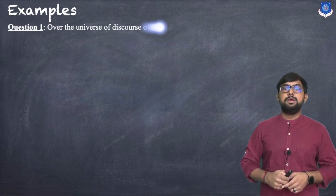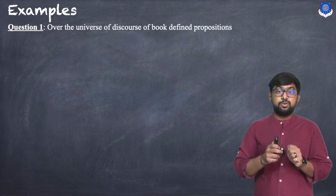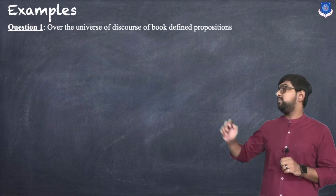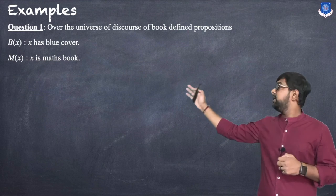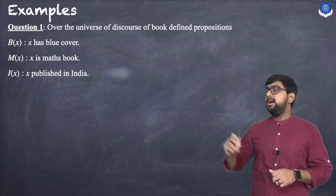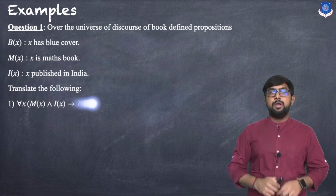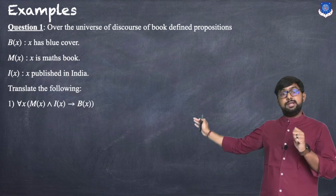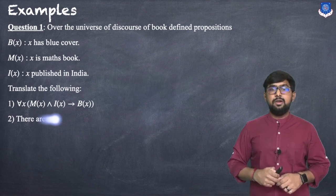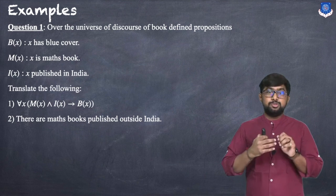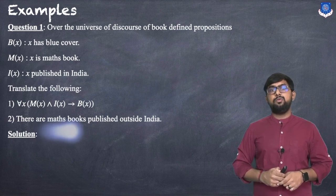Let us discuss examples. Over the universe of discourse of books, the defined propositions are: B(x) — x has blue color; M(x) — x is Matt's book; I(x) — x is published in India. We must translate the following: first, '∀x, M(x) ∧ I(x) → B(x)' (symbolic to sentence); second, 'there are Matt's books published outside India' (sentence to symbolic).